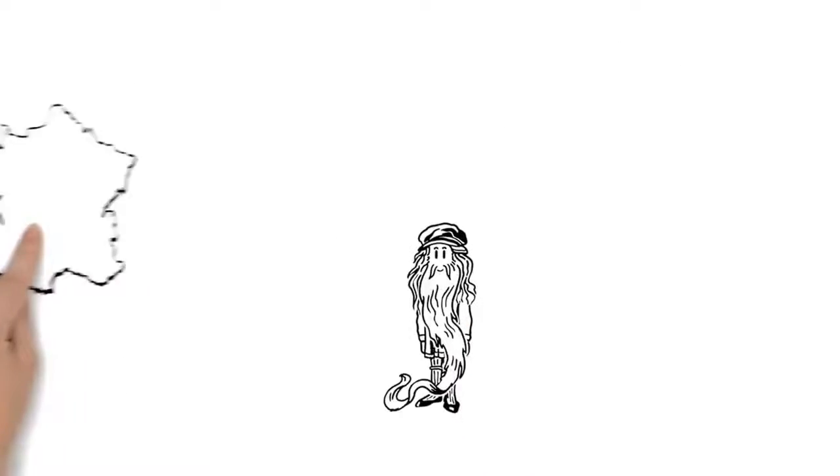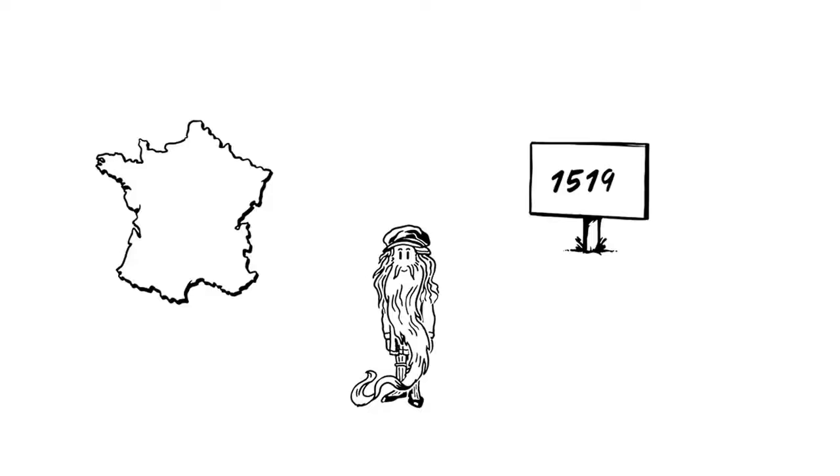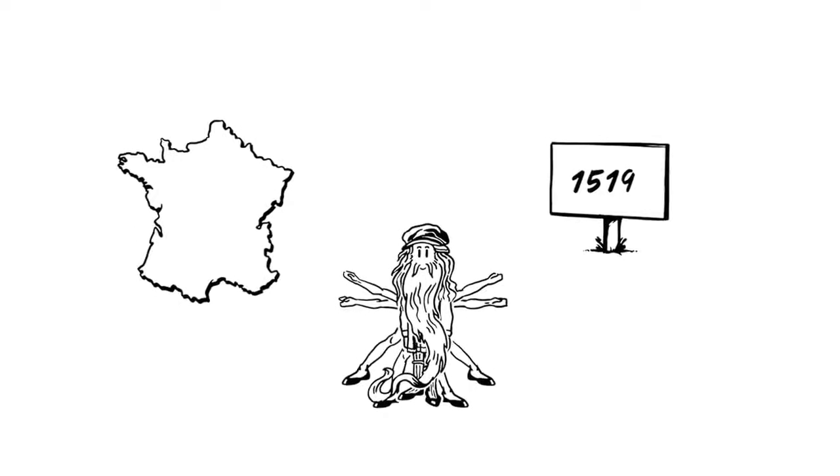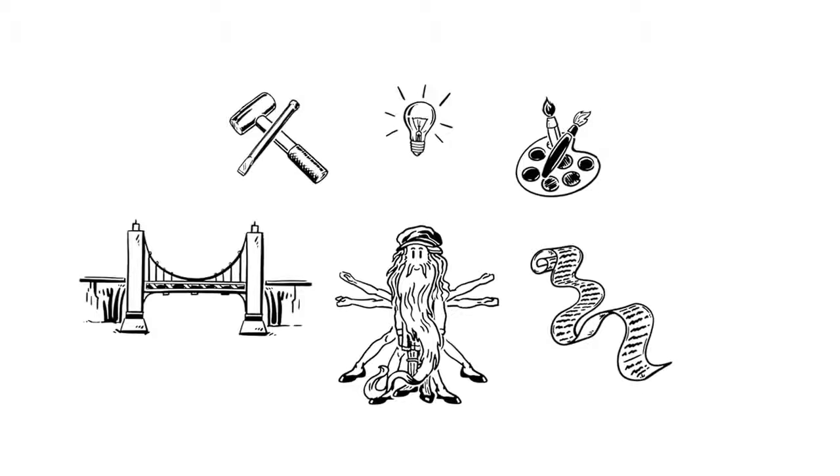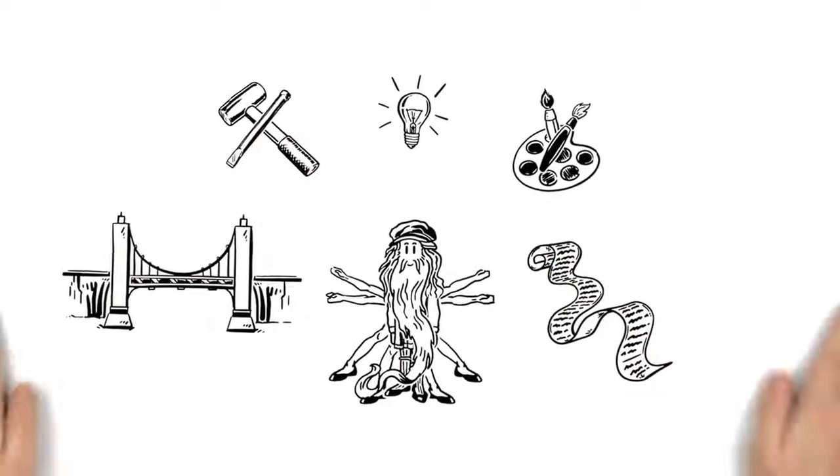He spent his final years in France. By his death in 1519, he had developed a legendary reputation as a Huomo Universale, or Jack of all trades. To this very day, Leonardo da Vinci is widely considered to be one of the most extraordinary people of all time.